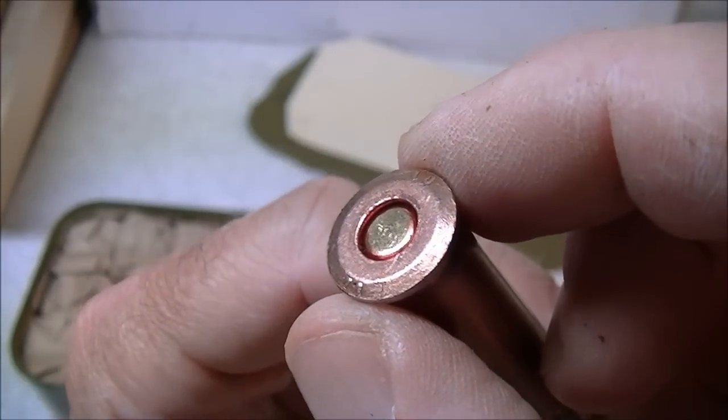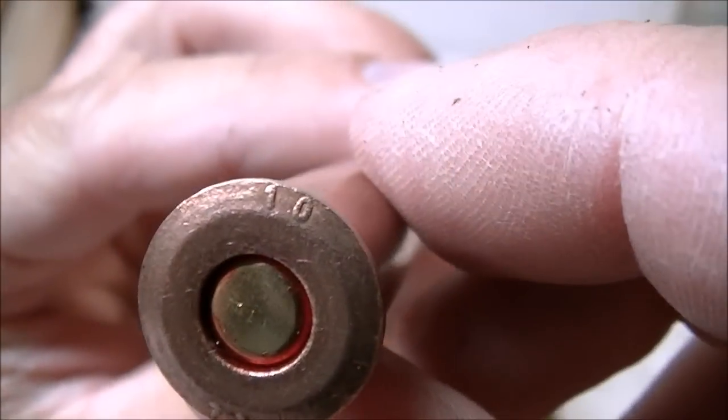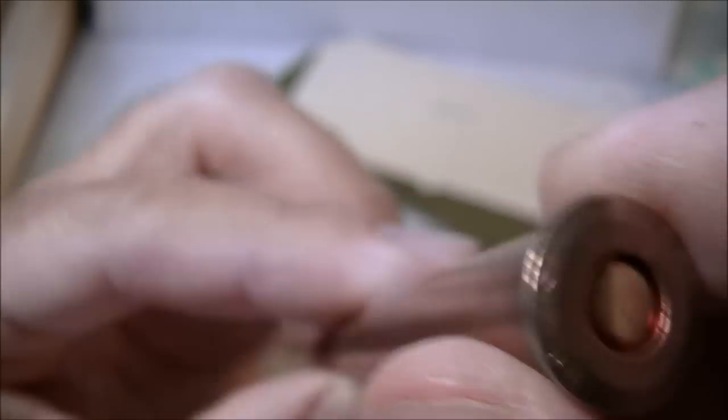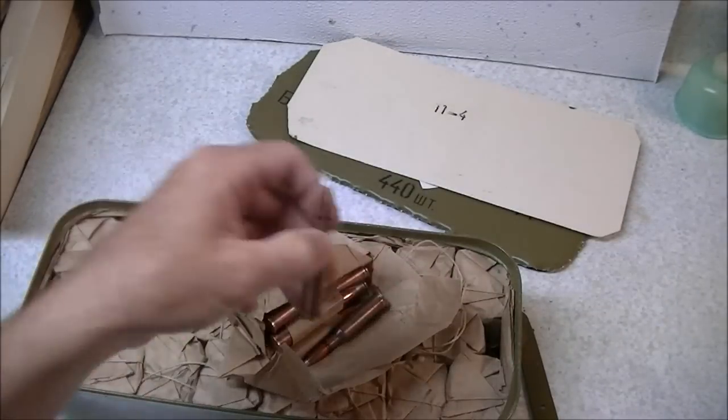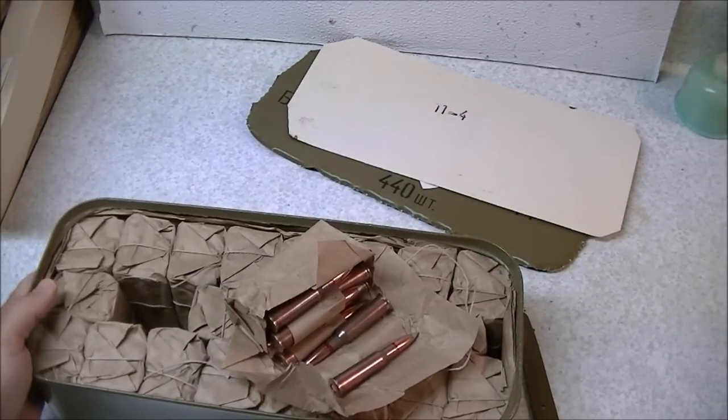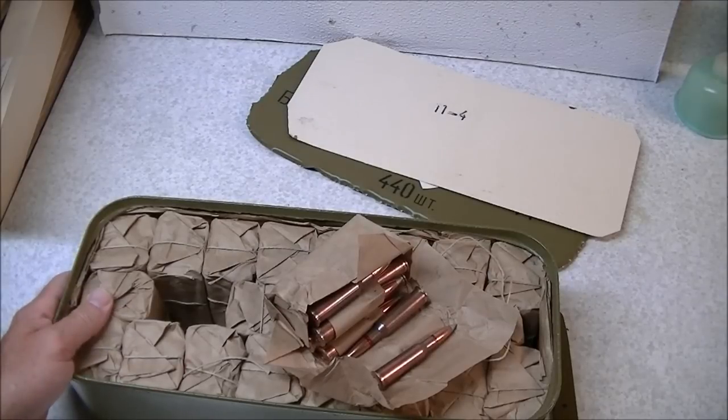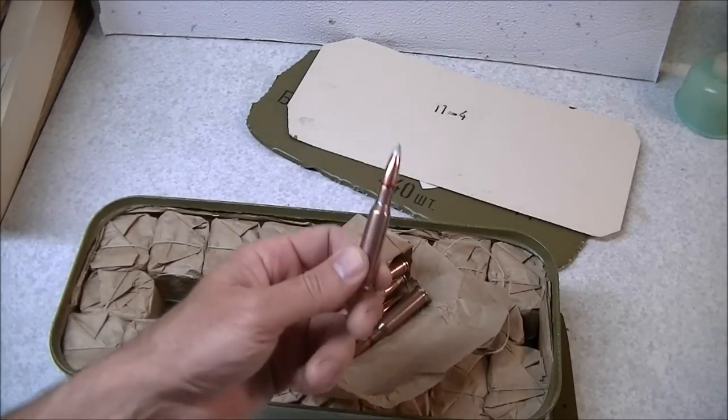You can see the factory code stamp on the top - 10 - and the year of production, 1971. So it is what it's supposed to be. I'm very pleased to have a good quantity of this. It's nice to have a reasonable quantity of good quality ammunition, and I hope to have lots of fun with this stuff out at the range shooting out of my various Mosins and maybe my SVT-40.